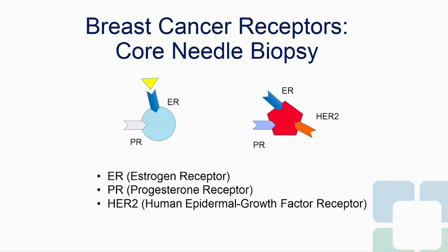On a core needle biopsy, breast cancer receptors can be identified. This is what's called the tumor biology — what type of cancer is it? The three receptors that we test for are the estrogen receptor, progesterone receptor, or the HER2 receptor.